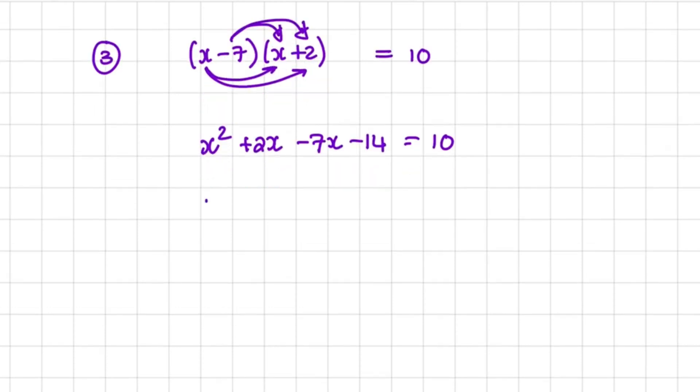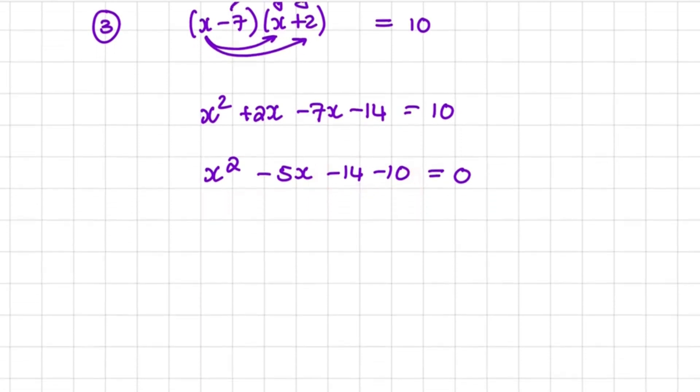So you would have x squared minus 5x minus 14 minus 10 equal to 0. Now this is partially in standard form. We can still add these like terms together. So we'll have x squared minus 5x minus 24 is equal to 0.